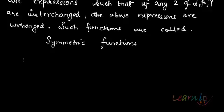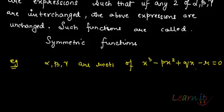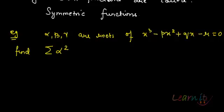In problems involving equations, you are often asked to find things like alpha squared beta squared gamma squared given that the roots are alpha, beta, gamma. You can find these from the information you have about the equation. For example, let alpha, beta, gamma be roots of x³ - px² + qx - r = 0. Let us try to find the summation of alpha squared, which means alpha squared plus beta squared plus gamma squared — a symmetric function.